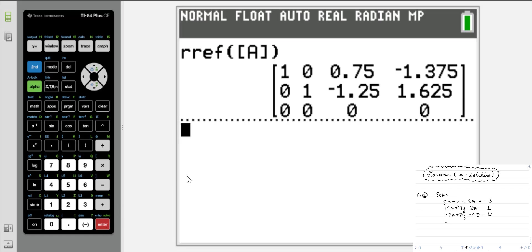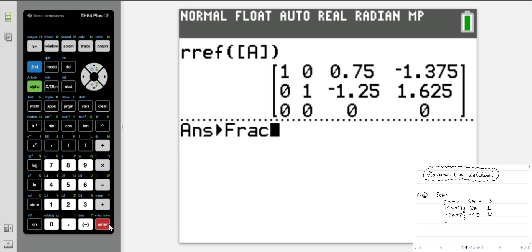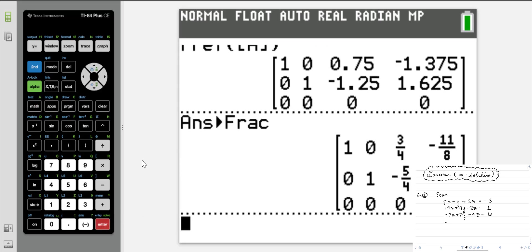There's our reduced row echelon form in decimal form. For pre-calculus, at least with me, I certainly request students to put everything into fractions, because that makes your answer exact, versus sometimes you're rounding and you don't necessarily realize it. So to convert this to fractions, we'll hit the math key, and then we'll hit enter on the frac key. Then we hit enter again, and there's our matrix in reduced row echelon form.